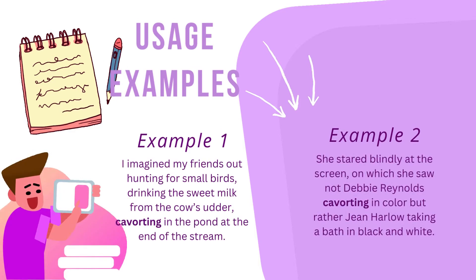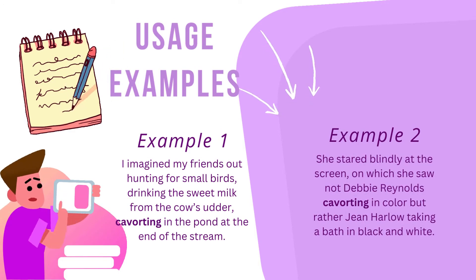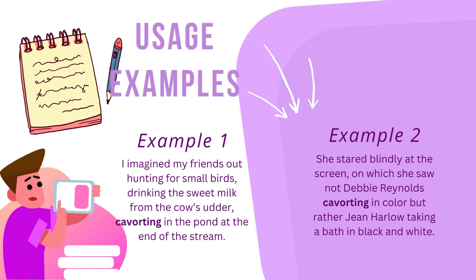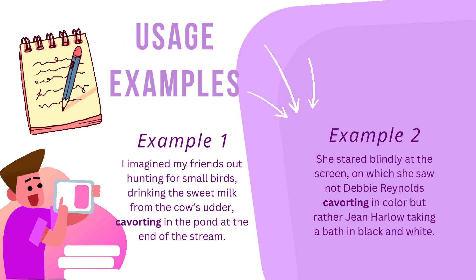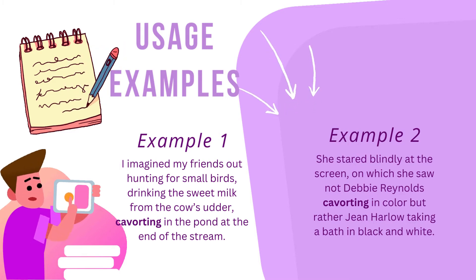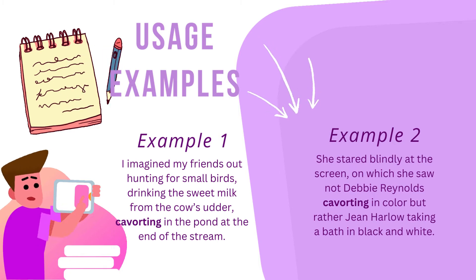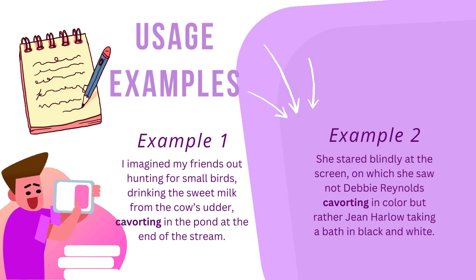Usage examples. Example 1: I imagined my friends out hunting for small birds, drinking the sweet milk from the cow's udder, Kavorting in the pond at the end of the stream. Example 2: She stared blindly at the screen, on which she saw not Debbie Reynolds Kavorting in color, but rather Jean Harlow taking a bath in black and white.